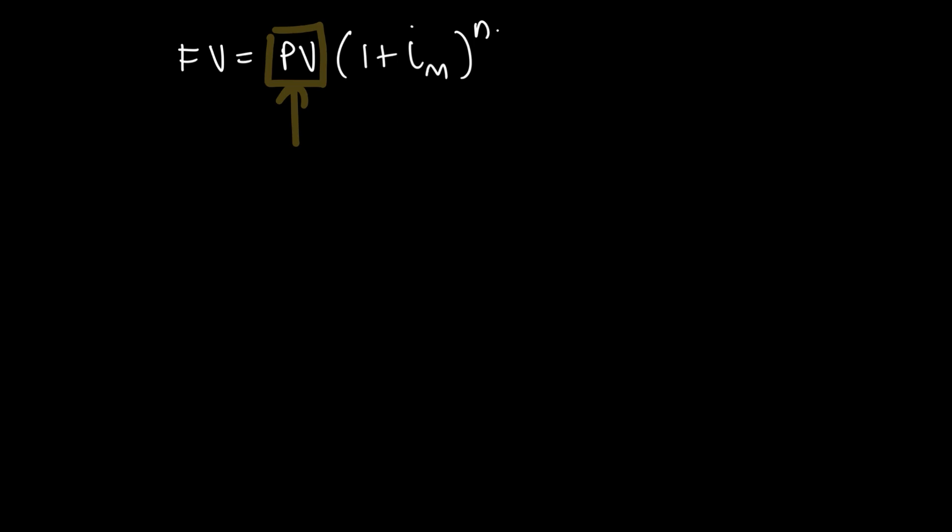Now for this one, we can basically just divide through by the entire term sitting over there. So we're going to say FV divided by 1 plus i over m to the power of n is equal to PV.